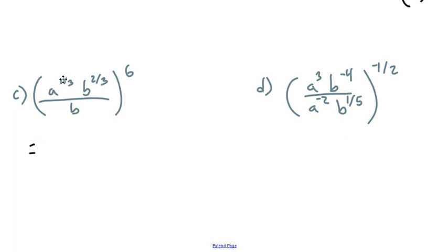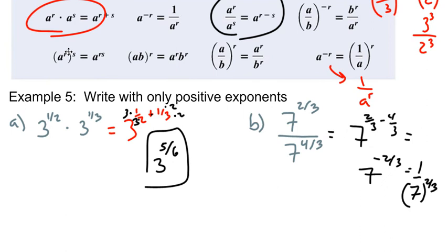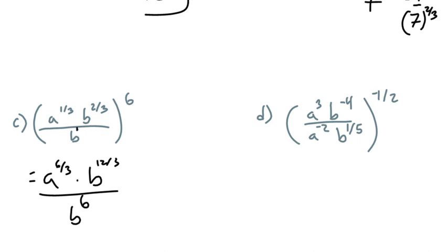So if I raise a to the one third to the power of six — that's the power-of-a-power rule right here: if I have a to the power of something, quantity to the power of another thing, we're going to multiply r and s. So in the same way, we're going to multiply one third times six. We're going to have a to the six over three because I did one third times six. Then do the same thing with the b: b to the six times two, so that's 12 over three. And do the same thing for the denominator — b to the power of just six, because we can think of this as a ghostly one here: one times six. So simplifying, I get a to the two and b to the fourth on top, and b to the six on the bottom.